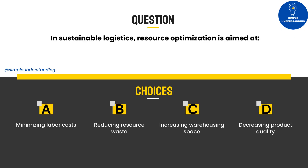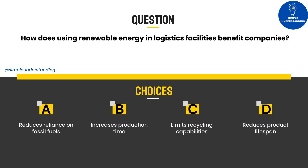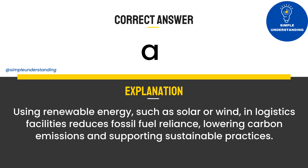Resource optimization maximizes output by using materials, labor, and time efficiently, conserving resources and supporting environmental goals. Question 5: How does using renewable energy in logistics facilities benefit companies? A. Reduces reliance on fossil fuels. B. Increases production time. C. Limits recycling capabilities. D. Reduces product lifespan. Answer: A. Using renewable energy such as solar or wind in logistics facilities reduces fossil fuel reliance, lowering carbon emissions and supporting sustainable practices. Question 6: What is a key component of reverse logistics for sustainability? A. Expanding inventory storage. B. Managing product returns sustainably. C. Reducing customer satisfaction. D. Eliminating waste management. Answer: B.